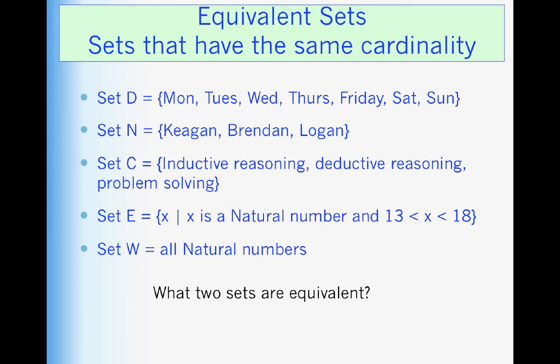Now we have just a couple more concepts to cover. Equivalent sets. Equivalent sets are two sets that have the same cardinality. So they have the same number of items. Those items don't have to be the same. It's just the number of items. So if you look at set N and C, they each have 3 items. So we would say that they are equivalent.